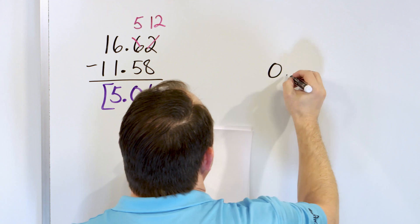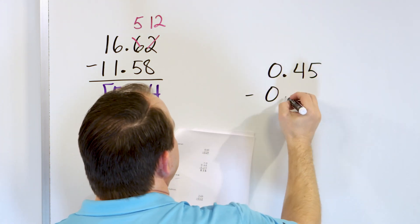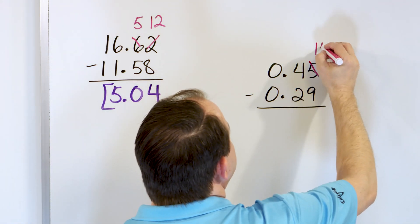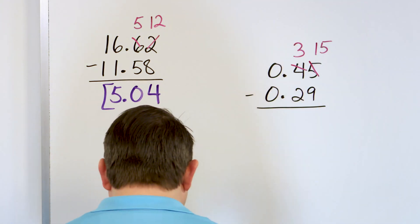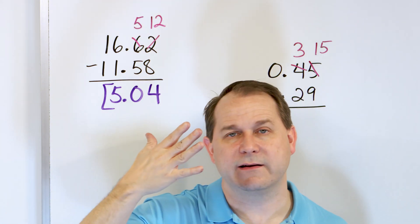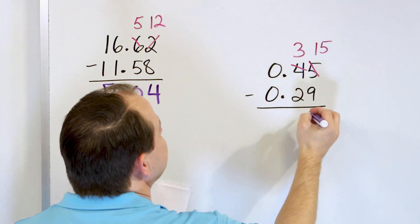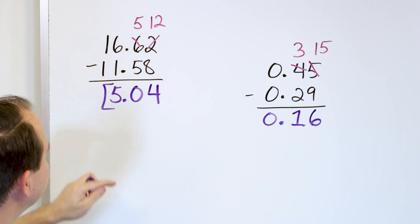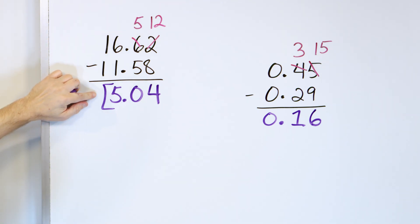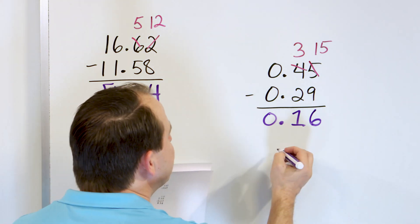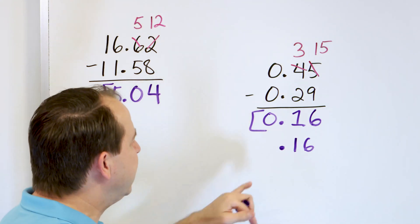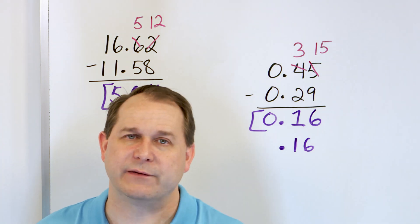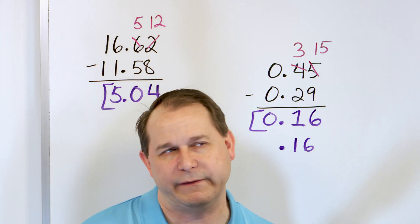Let's take a look at the next problem: 0.45, and we'll subtract from that 0.29. Far right column: 5 minus 9 — can't do that, 5 is not big enough. Make it a 15, and this then becomes a 3. Start with 15 and subtract 9: 14, 13, 12, 11, 10, 9, 8, 7, 6. We land on 6. 3 minus 2 is 1. 0 minus 0 is 0. The answer could be written as 0.16 — you don't have to put leading zeros, but when you have a decimal point it's very common to put a 0 in front to show there's no whole part.